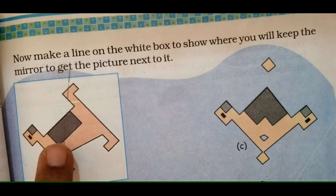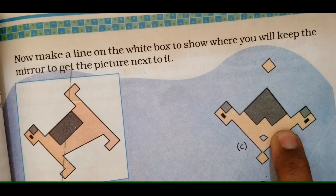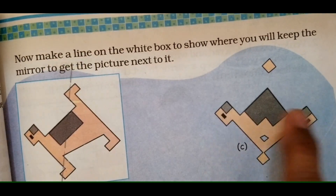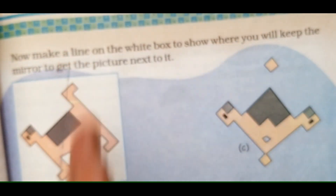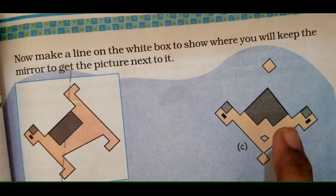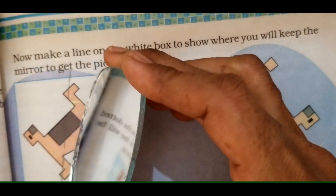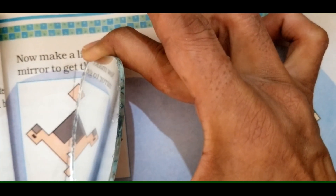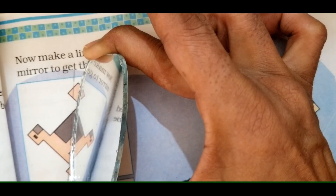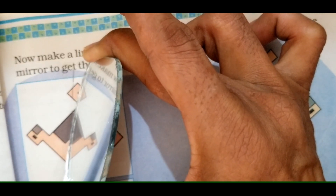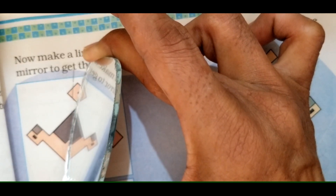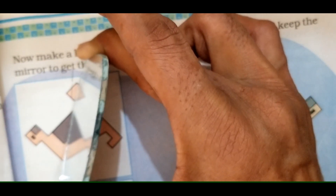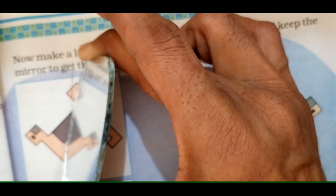This is the picture and this is the mirror image we have to get. I can see a head here. You can see two heads on the opposite sides. So, if I keep my mirror vertically, I can get this image. Can you see the mirror image now? It is the same as given here. One diamond at the top, one diamond at the bottom and two heads.